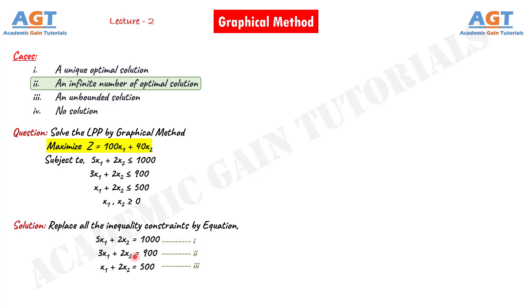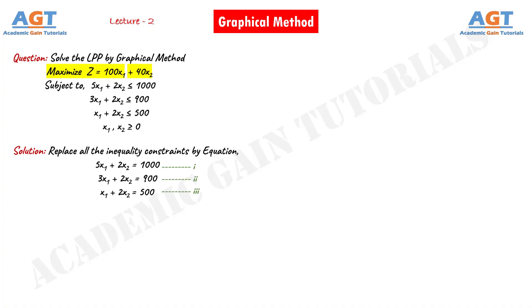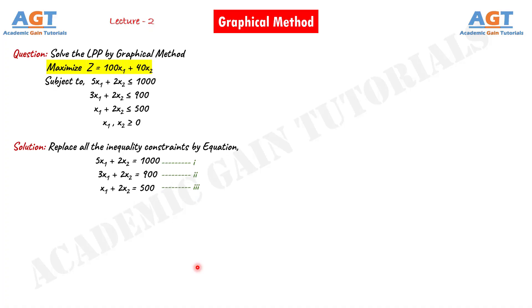This is equation number one, this is equation number two, and this is equation number three. We have seen two methods of plotting the graph in the previous lecture. You can use any one of the two methods that seem easier to you for plotting the graph. The first method seems simple to me, so I will use the first method for plotting the graph, where we have to divide the whole equation by the number on the right-hand side and then plot the values in the graph.